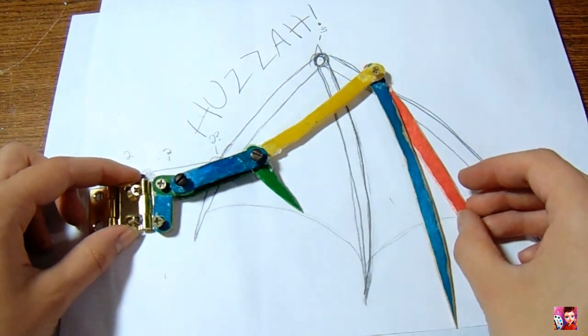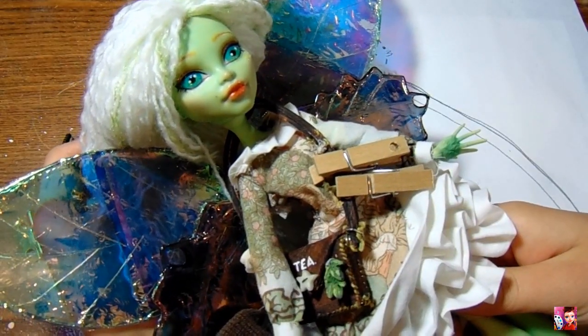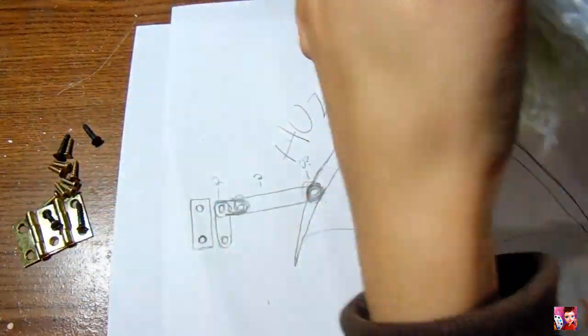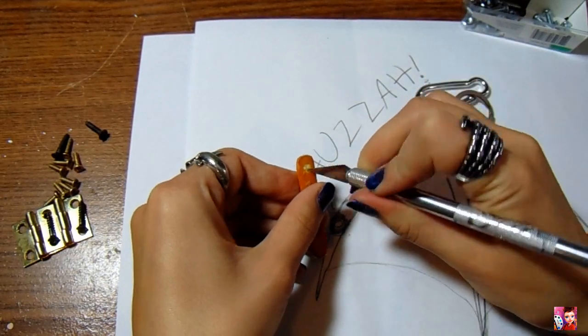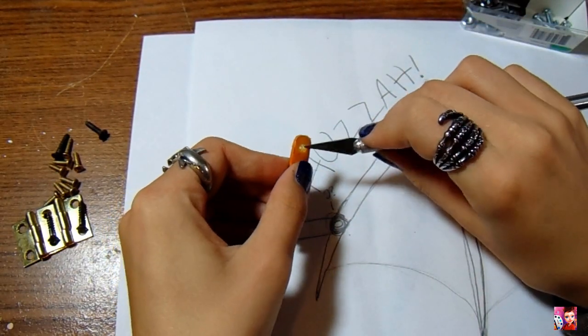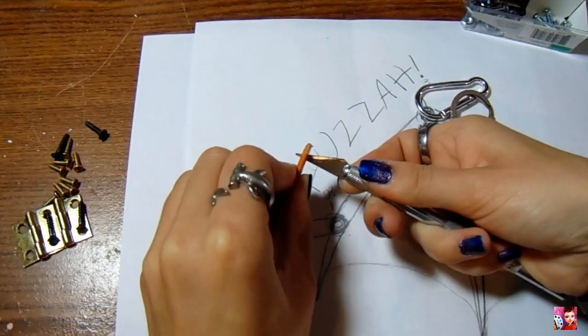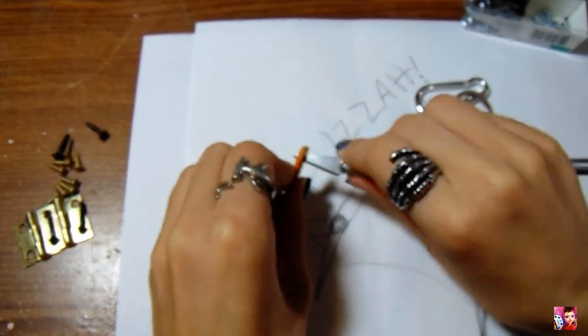But then I remembered, when I made Nymfit the tea fairy, I built her wings in a similar way, and I still had some of the hardware left over from that. They're a bit bigger, so all I have to do is widen the holes for them to pass through. And voila! Problem solved!